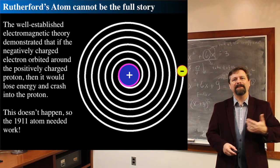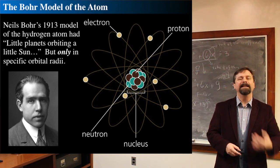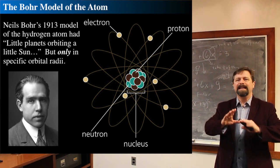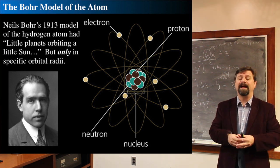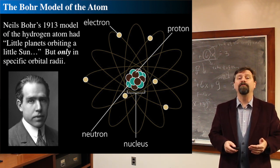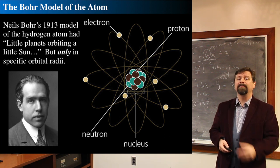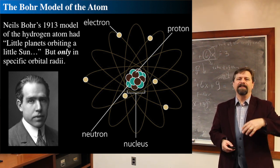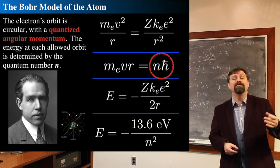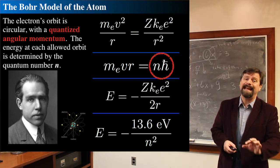In 1913, Niels Bohr addressed this. He said: imagine that the angular momentum of the objects was fixed. Every one of these little planets that orbits this little sun can only orbit at specific radii — that's his basic assumption. They can't spiral in. The Bohr model said the angular momentum had to have fixed values, specifically integer multiples of some value. So Bohr's model of the atom has quantized angular momentum.